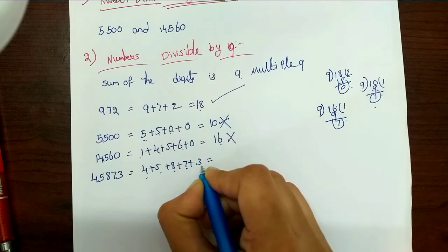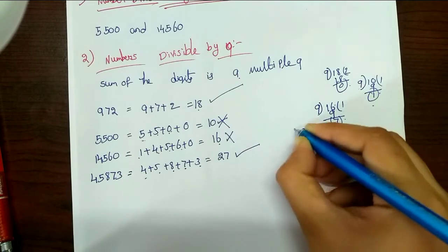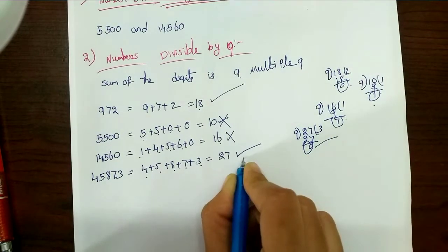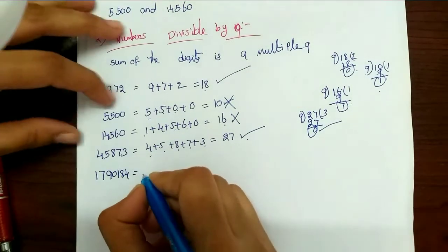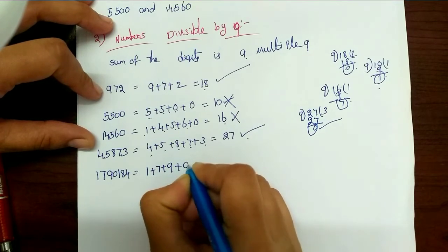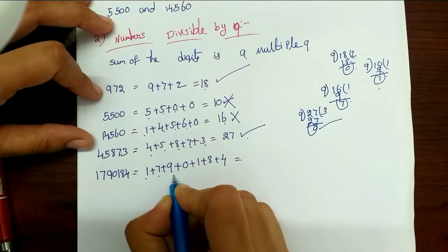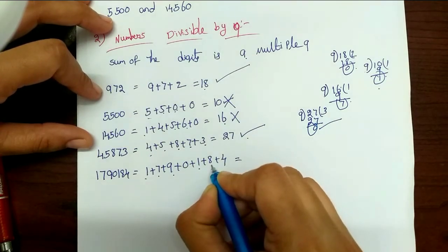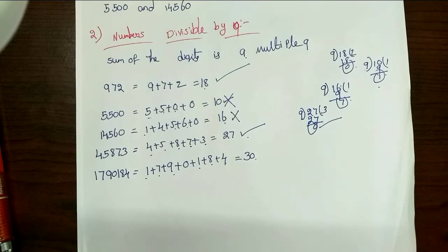For the next number, the digit sum is: 5 plus 9 equals 14 — wait, 9 plus 8 equals 17, 17 plus 7 equals 24, 24 plus 3 equals 27. Since 27 is a multiple of 9, this number is divisible by 9. For another number: 8 plus 9 equals 17, 17 plus 1 equals 18, 18 plus 8 equals 26, 26 plus 4 equals 30. Since 30 is not divisible by 9, this number is not divisible by 9.